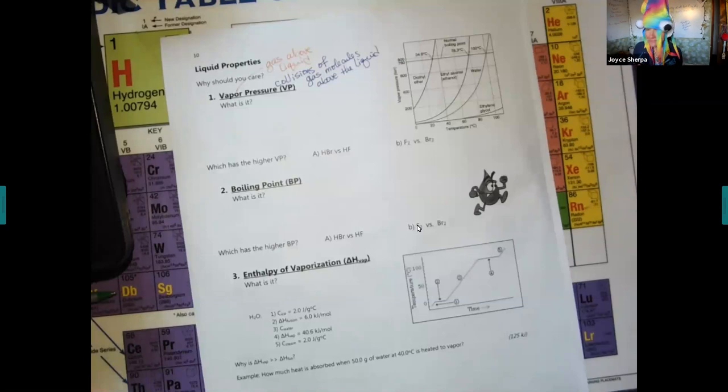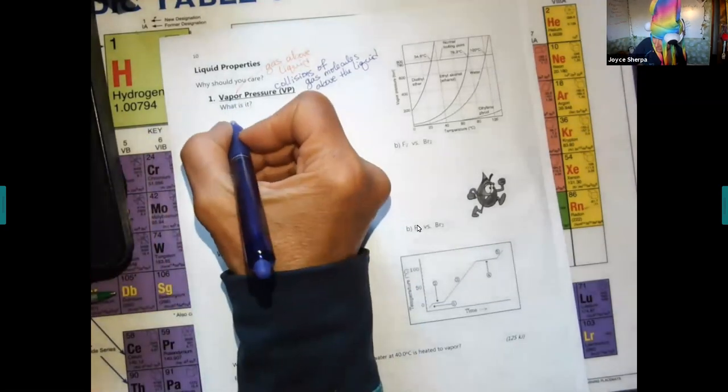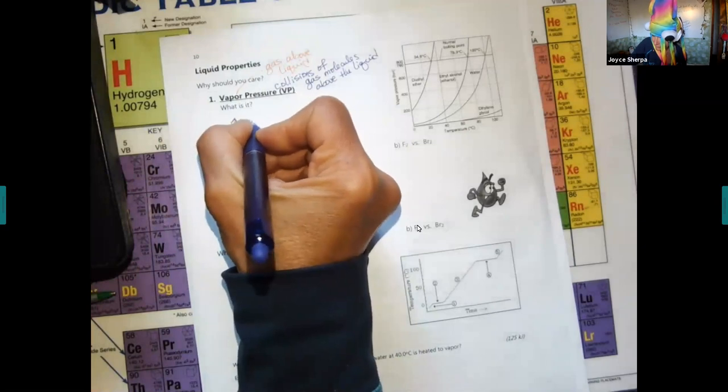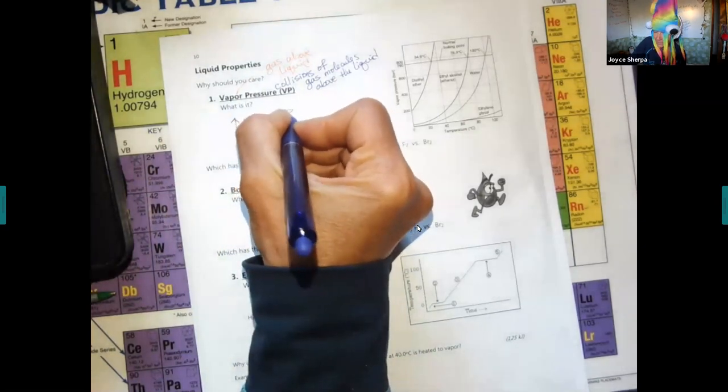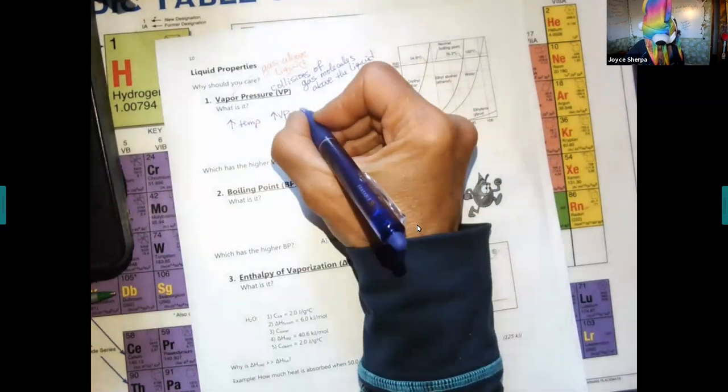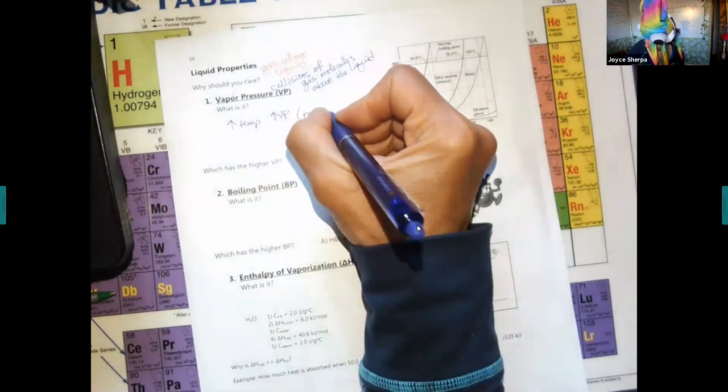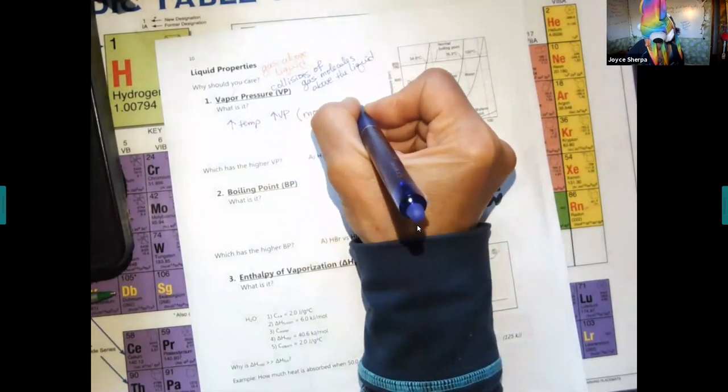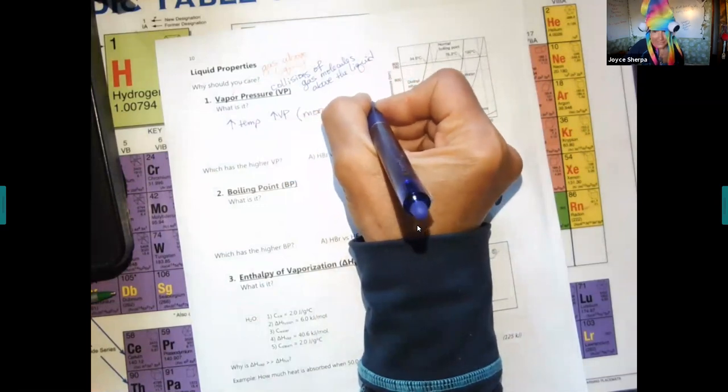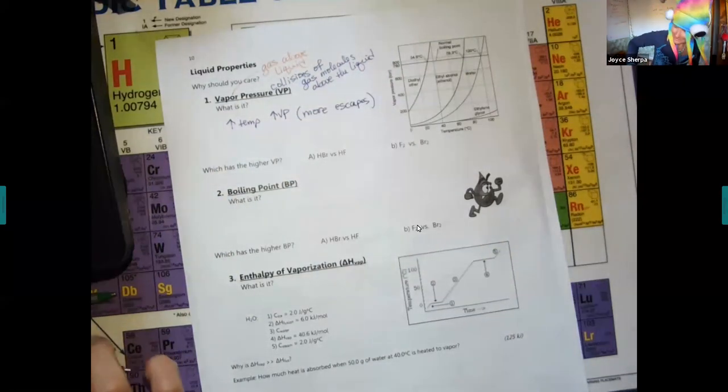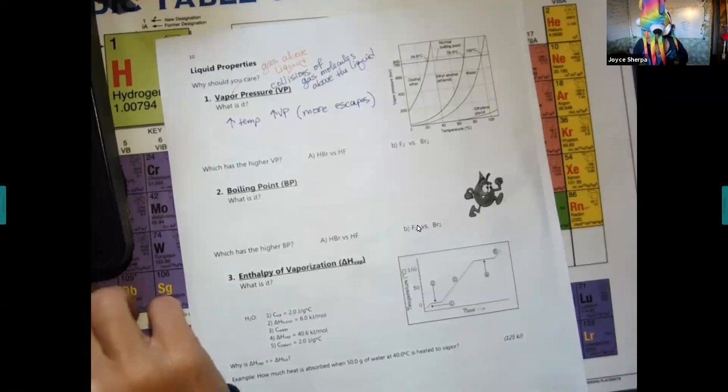When you have that hot coffee that Major can demonstrate for us. The steam's coming off. If he covered it, the steam would be colliding with itself and we could measure the pressure. As you increase temperature, you're going to always increase vapor pressure because more escapes.